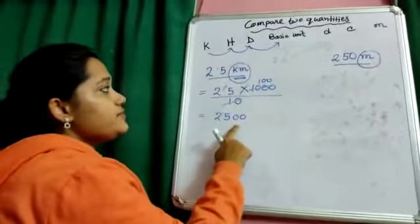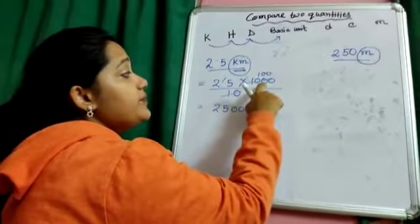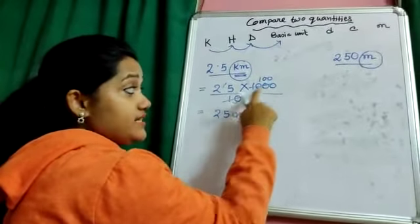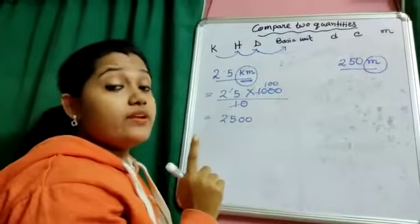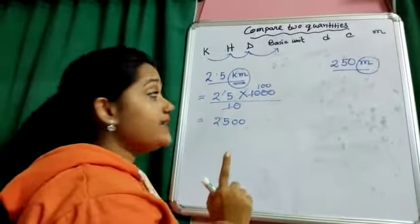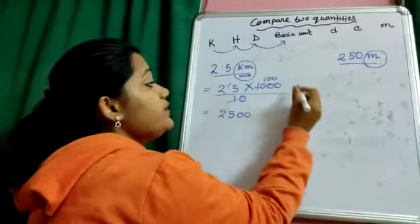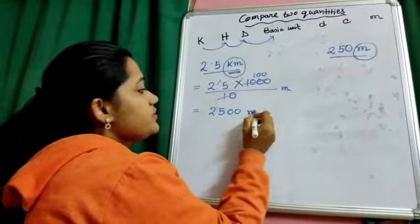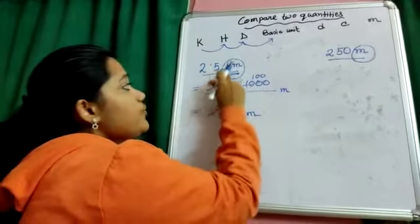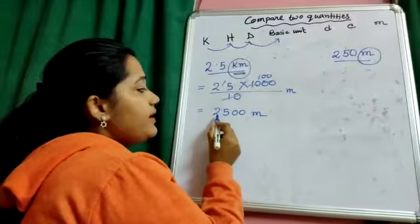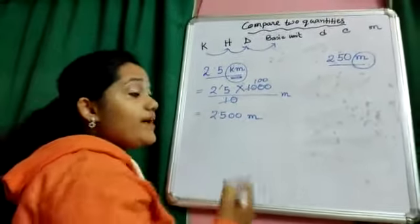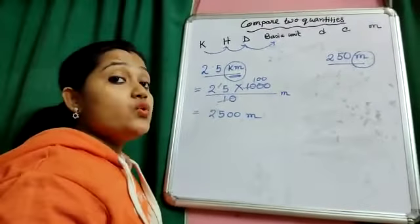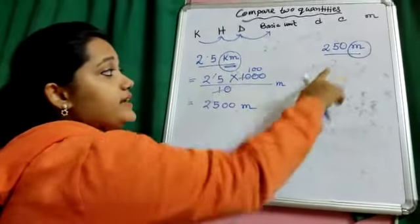So 2,500, and when I have multiplied it by 1000, the unit I should write as meter. So 2.5 kilometer is nothing but 2,500 meter.